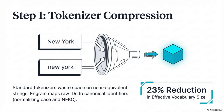Constant-time lookup is worthless if the retrieved pattern is wrong. Collisions can happen, words can have multiple meanings — so there's a safety valve: the gate. The transformer's current hidden state — what it's thinking about right now — becomes the query; the retrieved memory embeddings become the key and value. Then it does a quick check: a scalar gate, essentially a normalized dot product with a sigmoid.